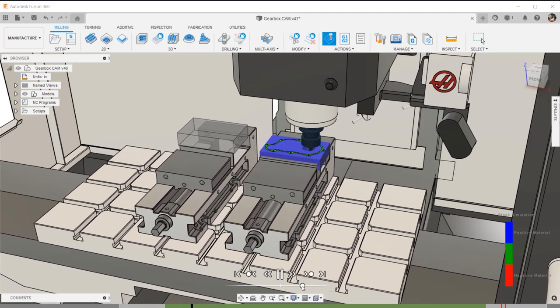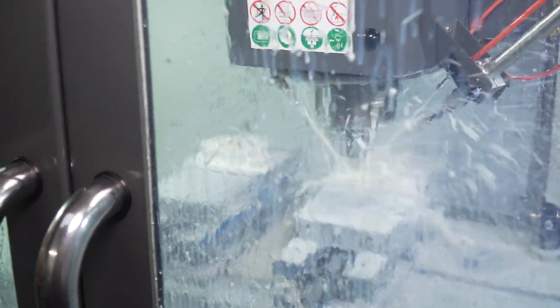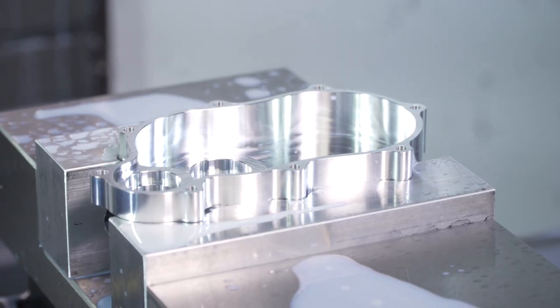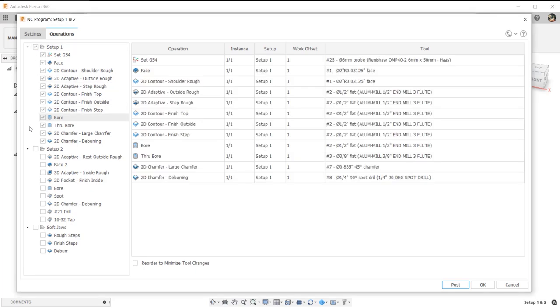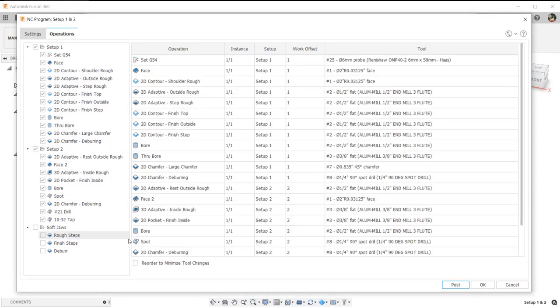After Op 2, the part is complete, so let's combine Setup 1 and Setup 2 together. With an NC program, we can add all of the operations for the first and second Op into one NC program, and also reorder to minimize the number of tool changes that will occur.